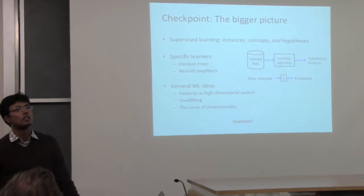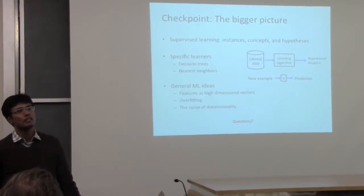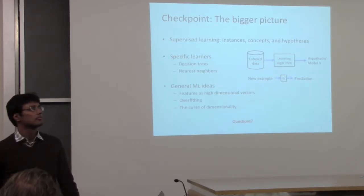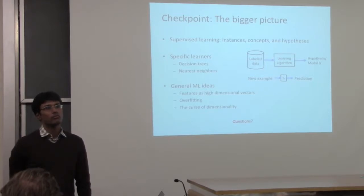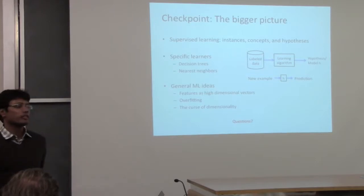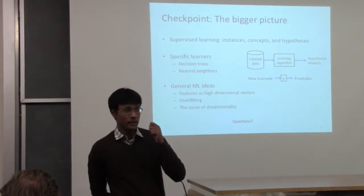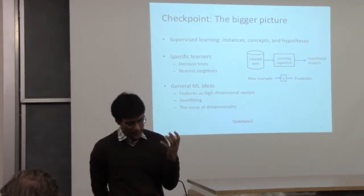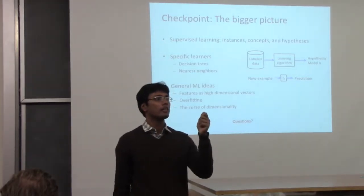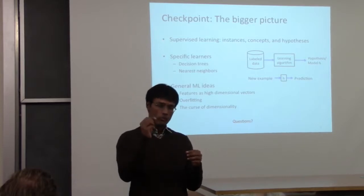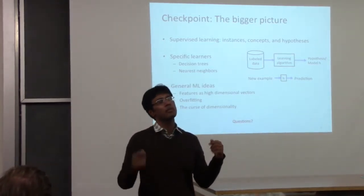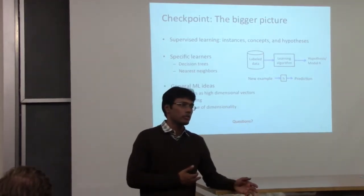A student asks about generalization: when staying in the same dimension and just creating a function that predicts labels, how does the nearest neighbor algorithm generalize? If you get a new example never seen before, the inductive bias says: given one point with a label, its immediate neighborhood has the same label. That's how you generalize — you go from one point to a collection of points and predict a label for a point you have never seen before.